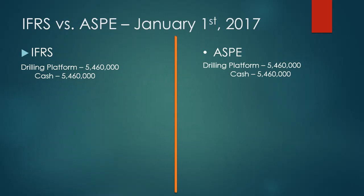The first thing we have to note is that we have to record under two separate financial reporting standards: IFRS and ASPE. IFRS stands for International Financial Reporting Standards and ASPE stands for Accounting Standards for Private Enterprises. IFRS is used worldwide while ASPE is used primarily in Canada. IFRS is used for public companies and ASPE is used for private companies.